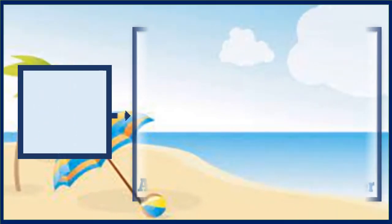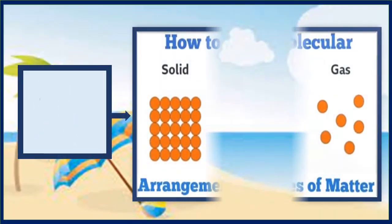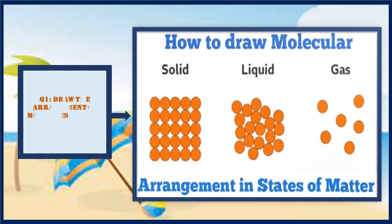Kids, your project number one is to draw the arrangement of molecules in solid, liquid, and gas. It is as simple as you can see in this picture. All you need is an A4-size paper. You have to draw this picture on that paper, then color it and label it. That's it.